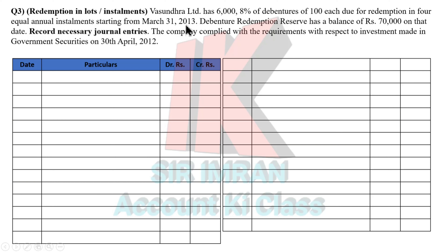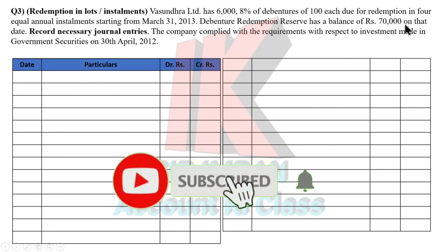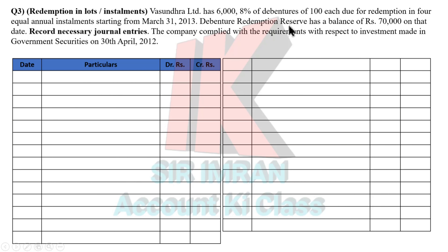The installment payments (redemption) will start from 31st March 2013. The DRR (Debenture Redemption Reserve) already has a balance of Rs. 70,000. Normally, the face value is Rs. 6 lakhs, so 25% of 6 lakhs is your required DRR.